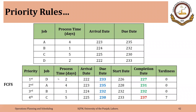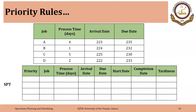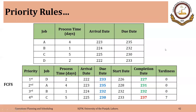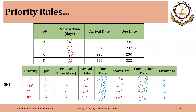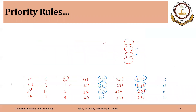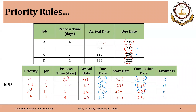Moving to the Shortest Processing Time rule: the result shows tardiness only for job C, also seven days. For the Earliest Due Date rule, job C is not late — it finishes exactly on time. Job B finishes one day before its due date. Job D is completed exactly at its due date. And job A is late by two days under the Earliest Due Date rule.